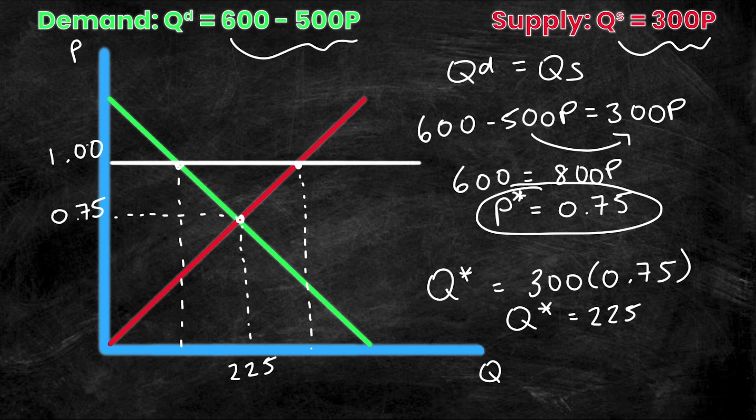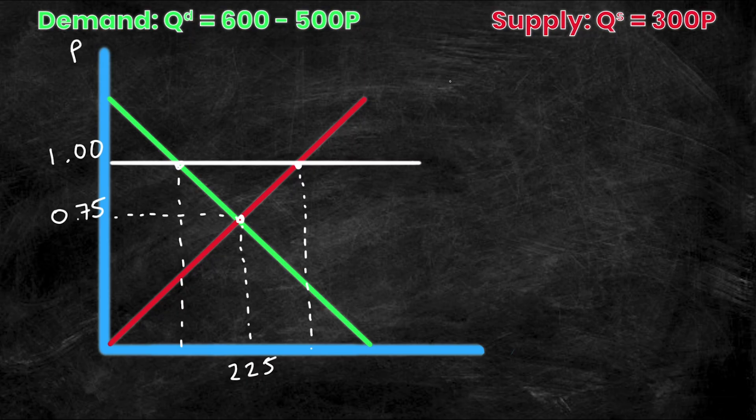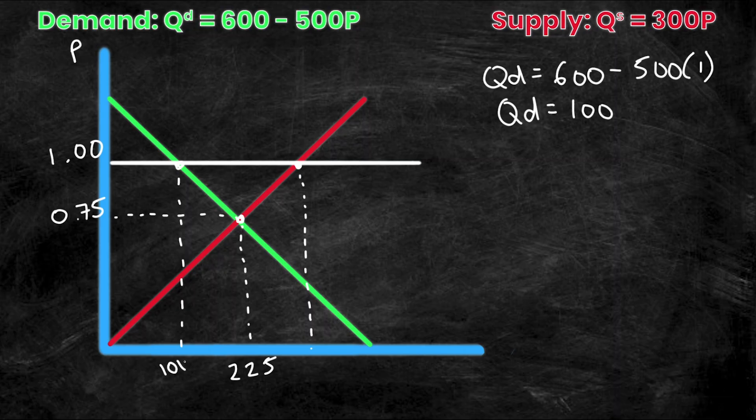Well, we actually have to sub in $1.00 into both the QD and QS equations separately. So let's do that. So first, let's sub it in to the QD equation. So QD is equal to 600 minus 500 times the price. Well, this new price is actually 1. So QD is going to be 600 minus 500, which is 100. So this value right here is equal to 100.